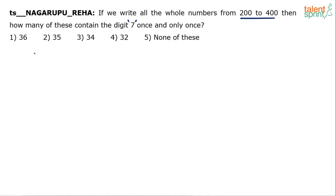Now, 200 to 400, you know that there are going to be 201 numbers. If you consider 200 to 400, there are going to be 201 numbers. I mean, of course 200 numbers and 200 is also included. From 201 to 400, there are 200 numbers, including 200, there will be 201 numbers. So, out of these 201 numbers, count of 201 numbers, how many will contain the digit 7 once and only once?